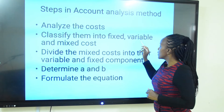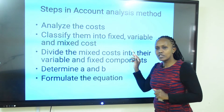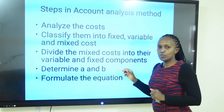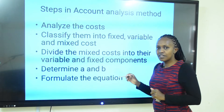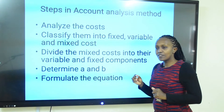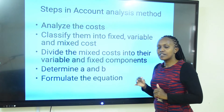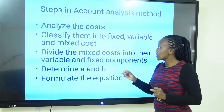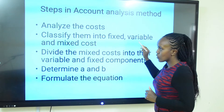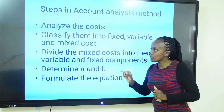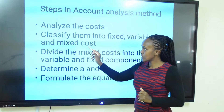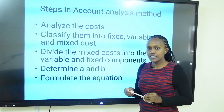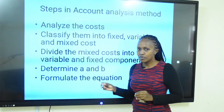Then you identify variable costs — costs that vary in direct proportion with activity level. As activity level increases, variable cost also increases proportionately. We are also going to look for mixed costs, which are costs that have both components of fixed and variable.